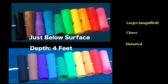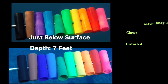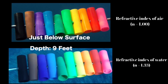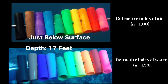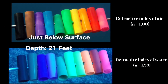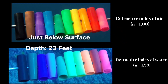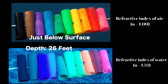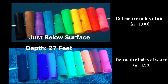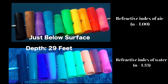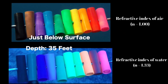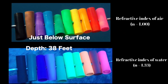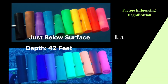Bending causes objects underwater to appear larger, closer, and distorted. The apparent size increase due to refraction in water is approximately 25 to 33% larger than the actual size. This magnification effect occurs because water has a higher refractive index of 1.33 compared to air, whose refractive index is 1.